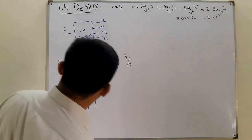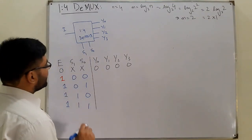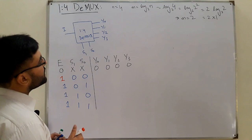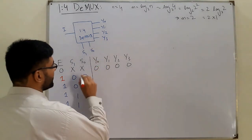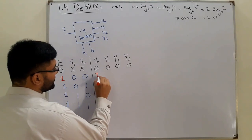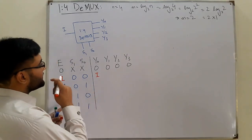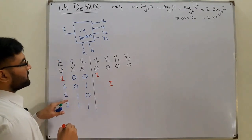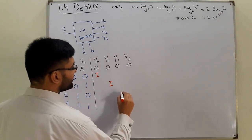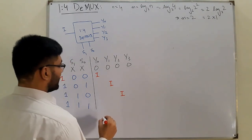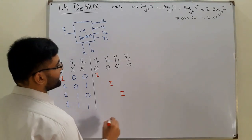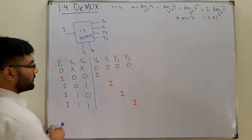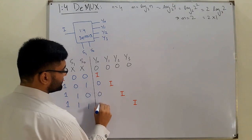When enable is 1, there are four combinations. For s1=0, s0=0, the input goes to y0. For s1=0, s0=1, it goes to y1. For s1=1, s0=0, the input is directed to y2. For s1=1, s0=1, the input goes to y3, and the rest are zeros.